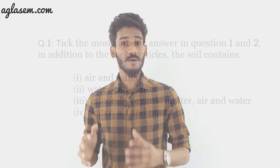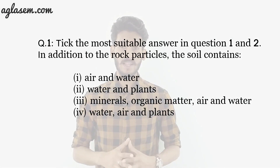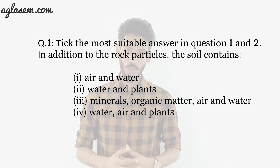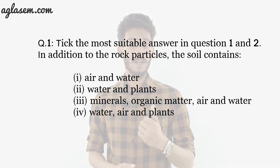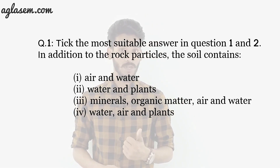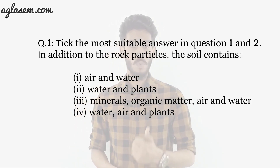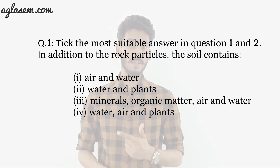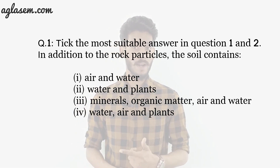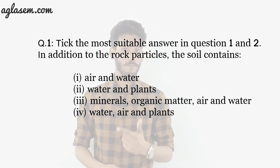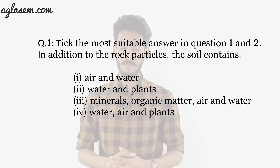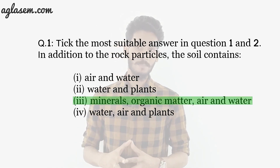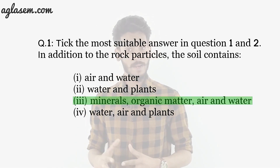Question 1: In addition to rock particles, the soil contains — option 1: air and water; option 2: water and plants; option 3: minerals, organic matter, air and water; or option 4: water, air and plants. The answer is option 3 — minerals, organic matter, air and water.